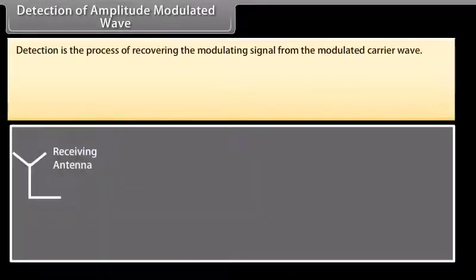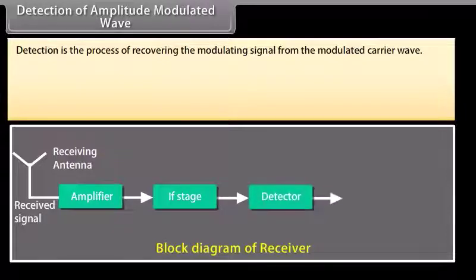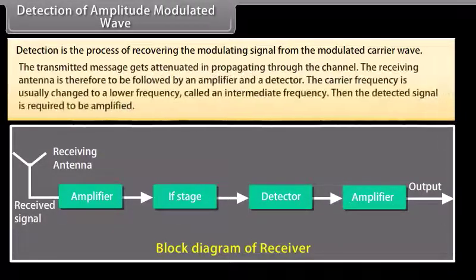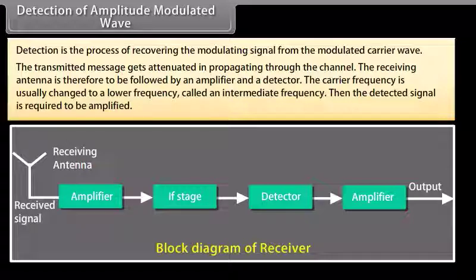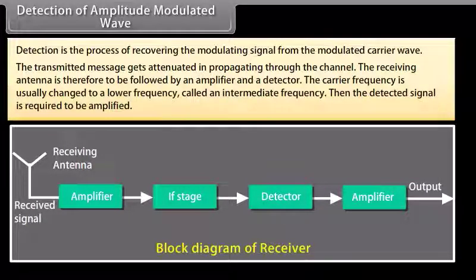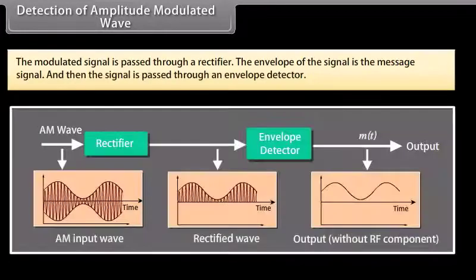Detection of amplitude modulated wave. Detection is the process of recovering the modulating signal from the modulated carrier wave. The transmitted message gets attenuated in propagating through the channel. The receiving antenna is therefore followed by an amplifier and a detector. The carrier frequency is usually changed to a lower intermediate frequency, and then the detected signal is amplified. The modulated signal is passed through a rectifier, whose envelope is the message signal, and then through an envelope detector.